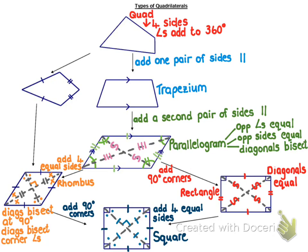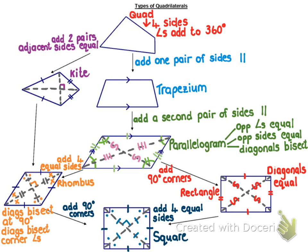Now if you go back to the top and take a quadrilateral, instead of going down to a trapezium, what happens if we go off to the left and add something different? What happens if we add two pairs of adjacent — adjacent means next to each other — sides that are next to each other equal? Then you get what we call a kite. A kite doesn't have too many properties, but it does have diagonals which are clearly not equal. These diagonals intersect at 90 degrees. The longer diagonal is not cut in half, but the shorter diagonal is.